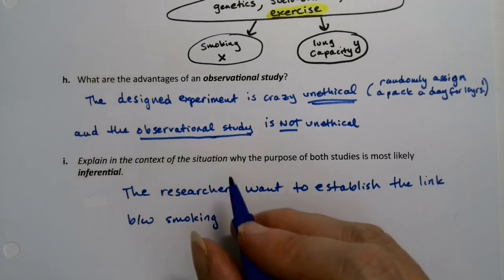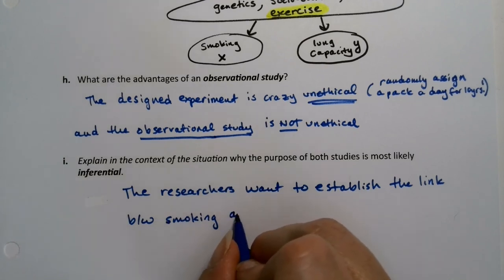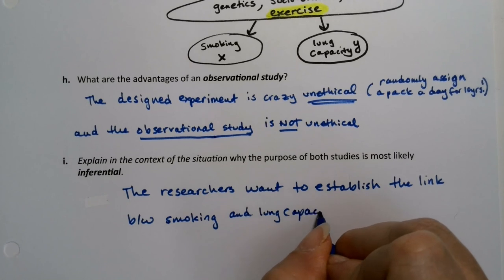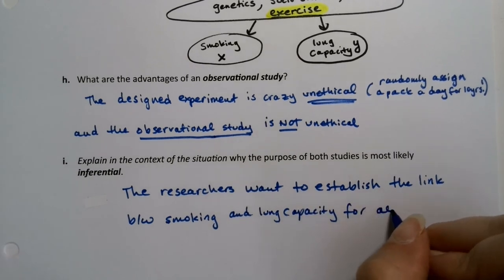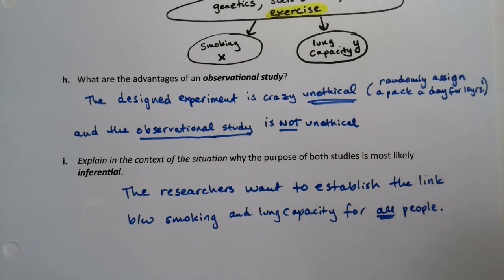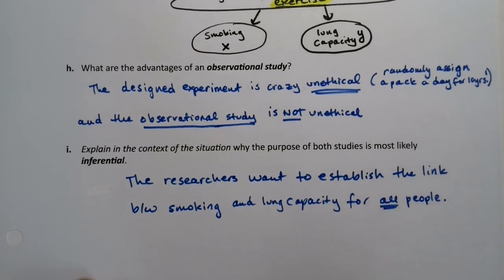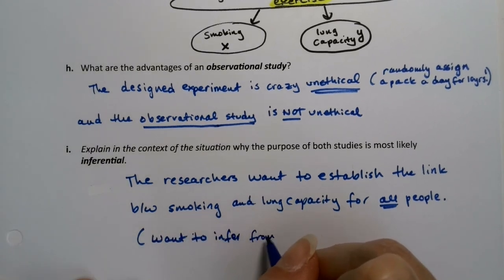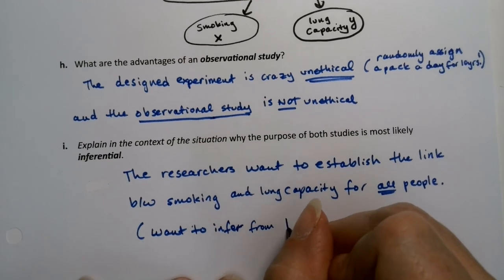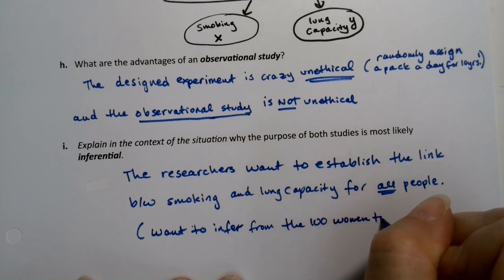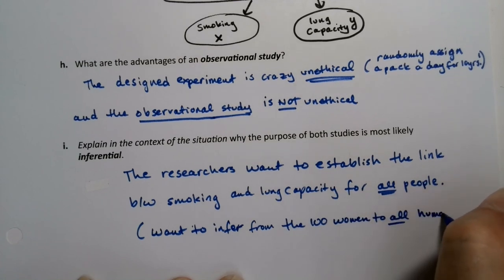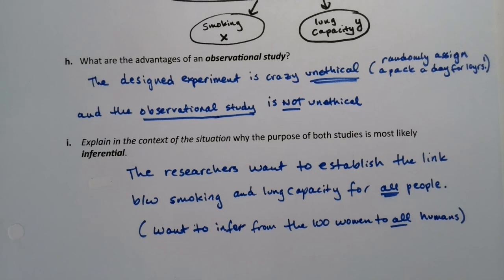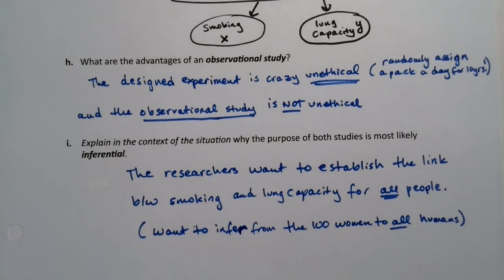One can imagine the more you smoke, the lower your lung capacity is — for all people. They want to infer from the results of this sample. They want to infer from the 100 women to all humans — take that sample and make an inference to all people. It's not just about those 100 women; it's about the whole group. Otherwise, what's the point of having either the experiment or the study?